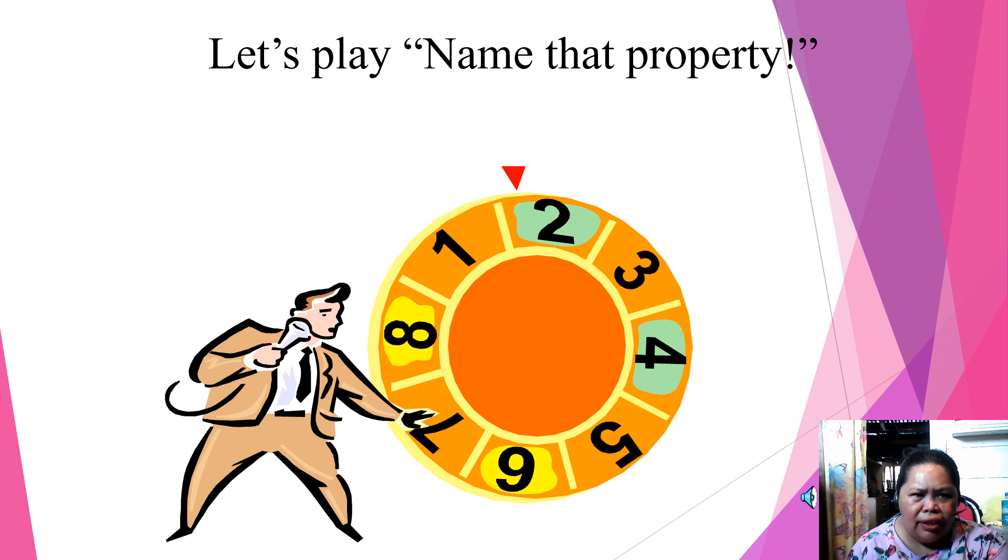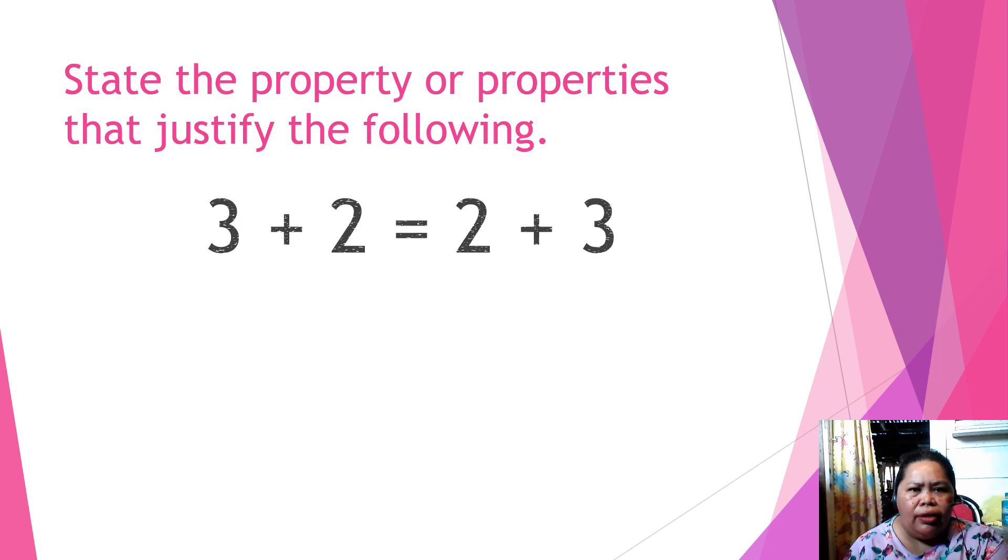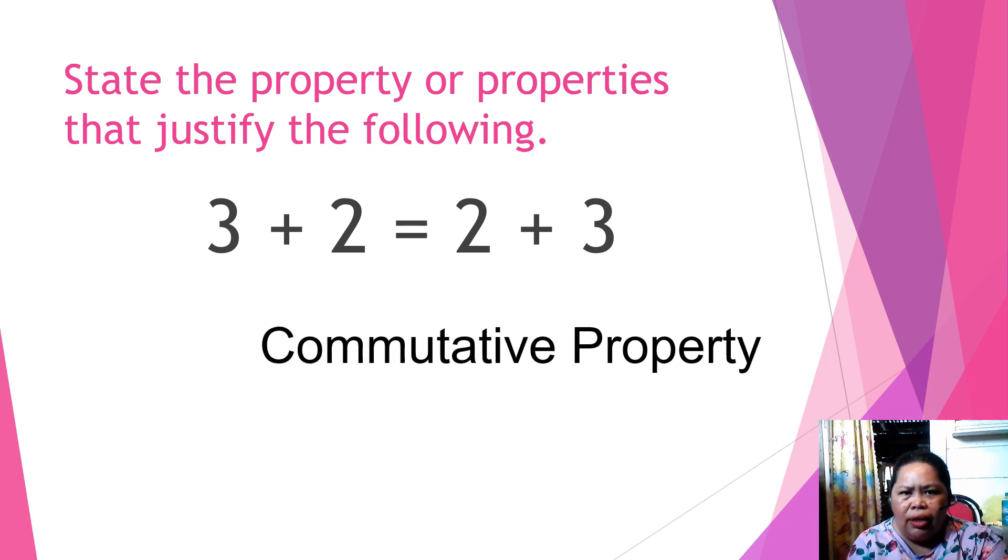Let us play name that property. State the property or properties that justify the following. 3 plus 2 is equal to 2 plus 3. The answer is commutative property.